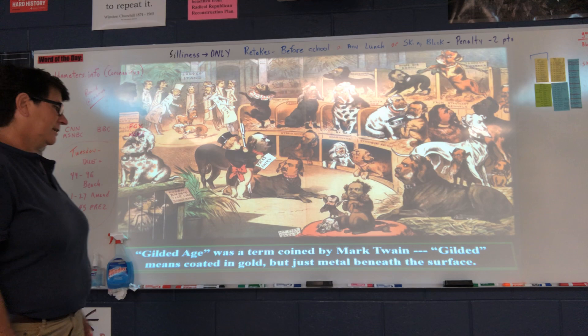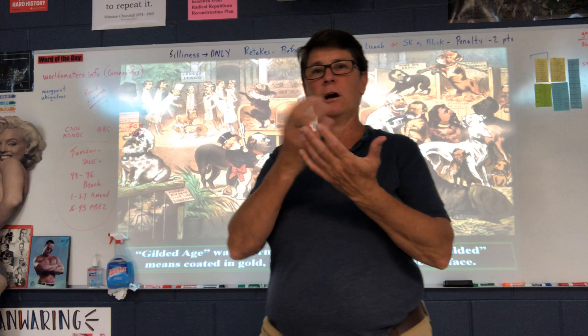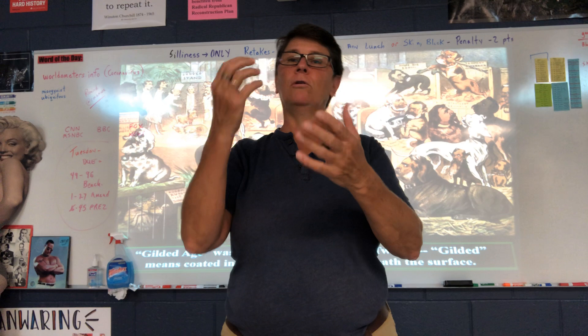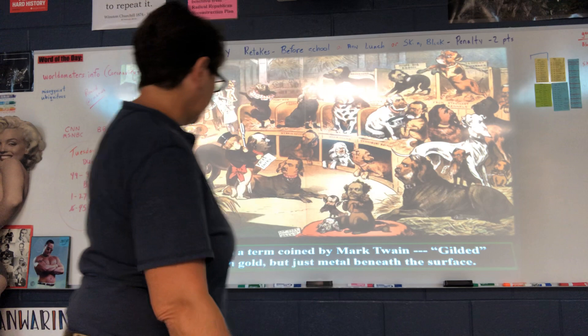The Gilded Age was a term coined by Mark Twain. Gilded means coated in gold, but with a different metal beneath the surface — like gold necklaces that look really thick and golden on the outside, but they're actually some other metal that's been gold-plated. They were dipped in gold so they look like gold, but they're not really gold. So this period is called the Gilded Age because it's dipped in gold — it looks good on the outside, but it's not really what it seems.